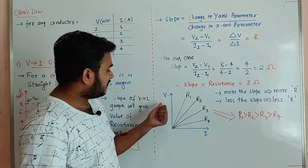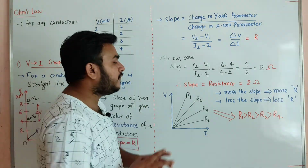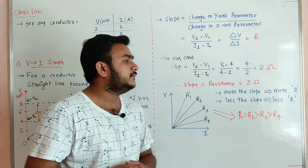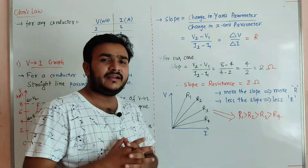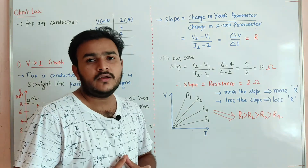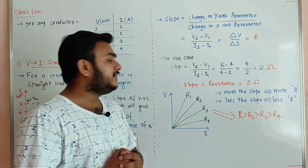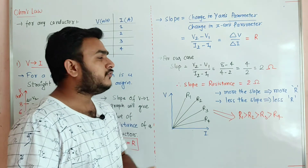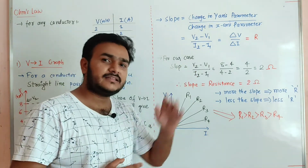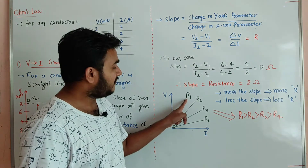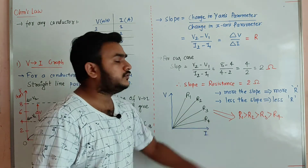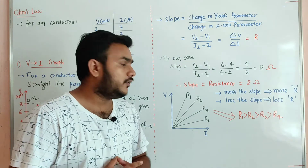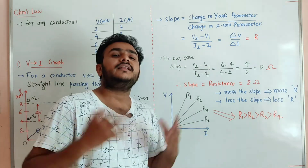The V versus I graph drawn for four different conductors with resistances R1, R2, R3 and R4 shows that more the slope, more the value of resistance. So R1 has the highest slope and thus the highest resistance, while R4 has the lowest slope and the lowest resistance. Therefore R1 is greater than R2, which is greater than R3, which is greater than R4.